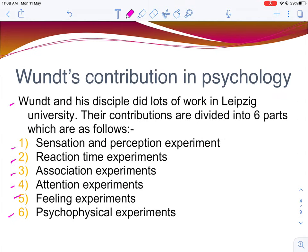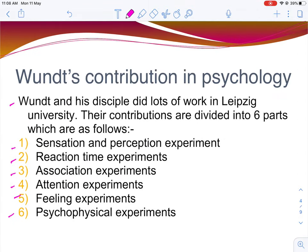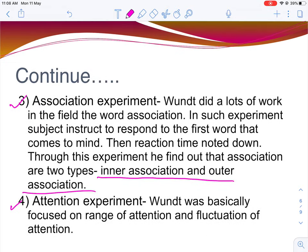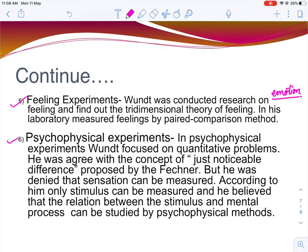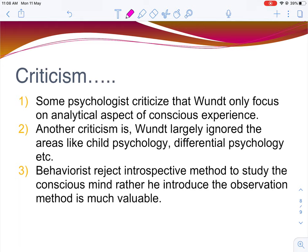So, Wundt's contribution was spread across six areas: sensation and perception, reaction time, association experiments, attention experiments, feeling experiments, and psychophysiological experiments. Despite these many contributions, Wundt was criticized by other psychologists in certain areas.